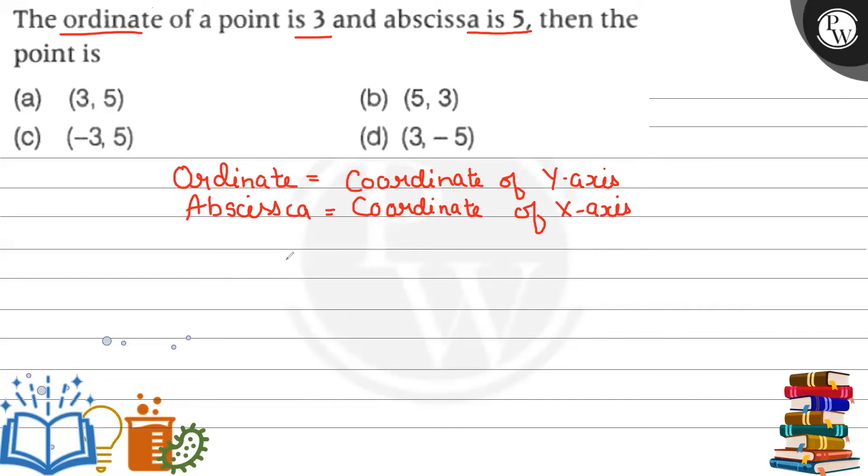From here, we can clearly see our x-coordinate is equal to abscissa's value is 5, so that is 5, and y-coordinate is equal to 3.